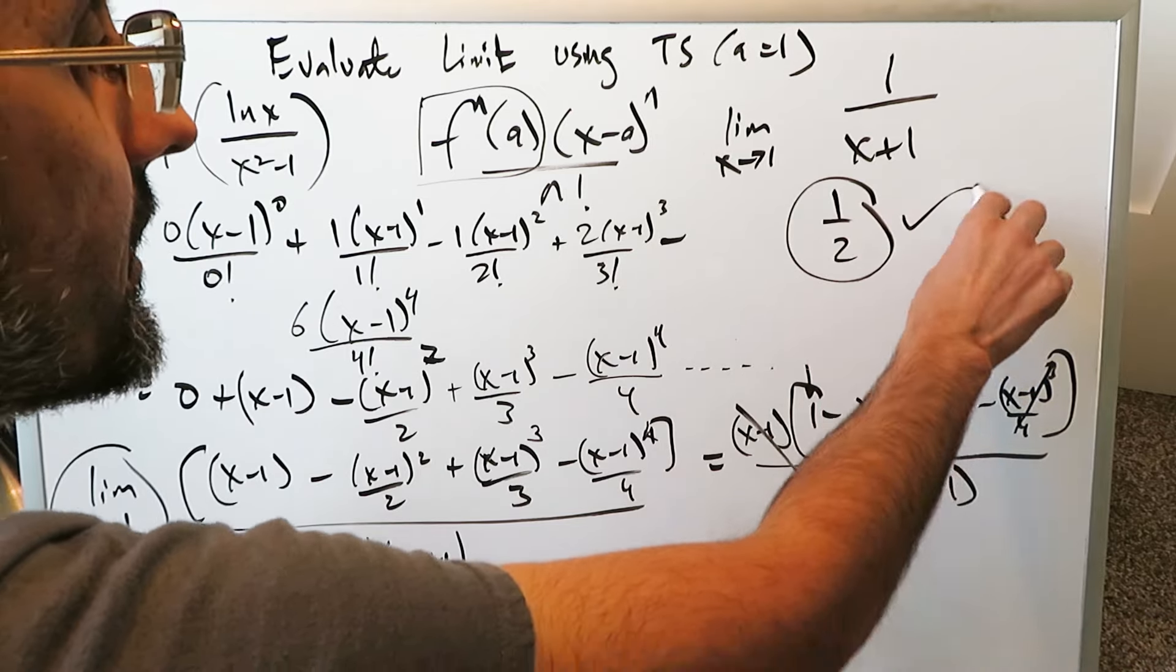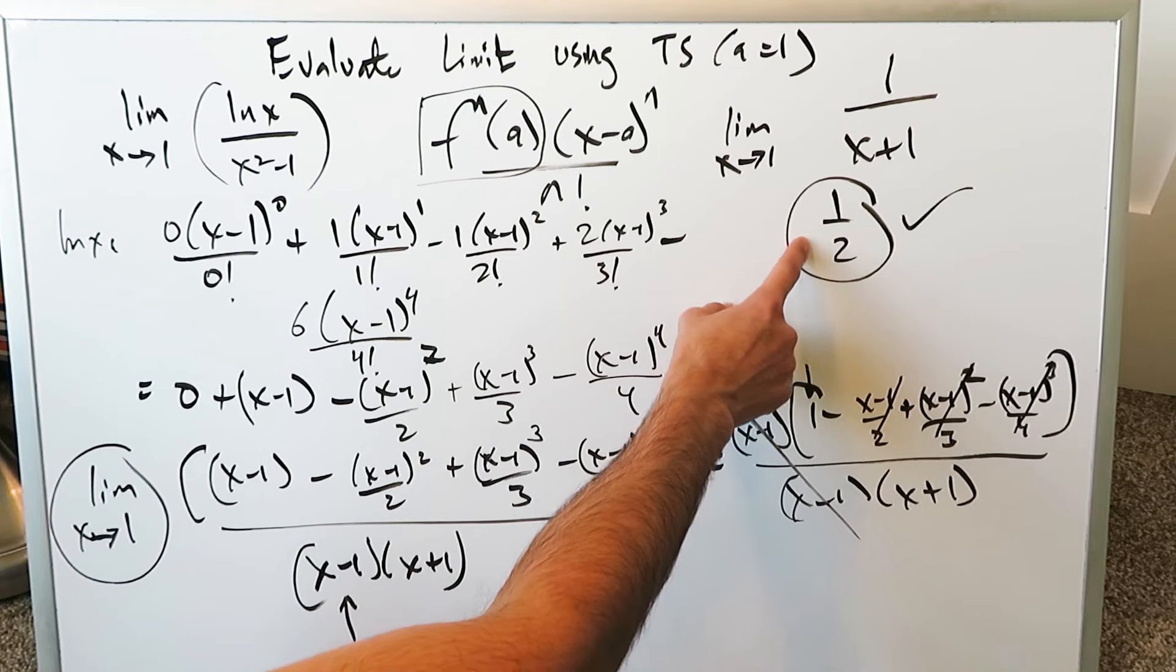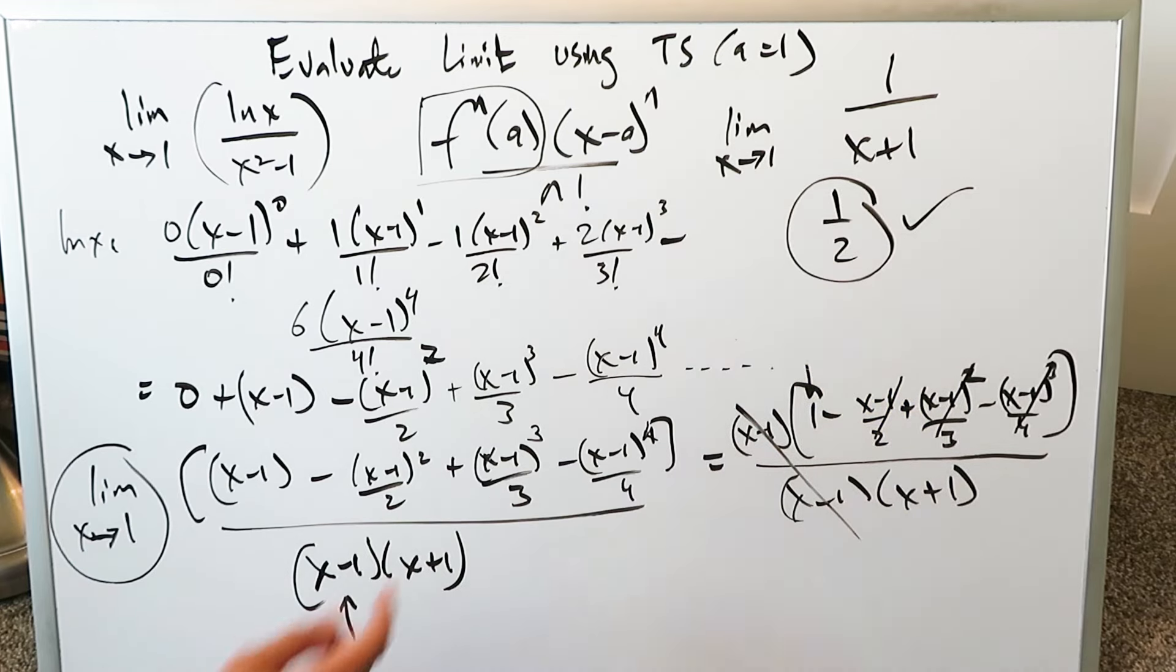You'll get here 1 over 2 and that will be your answer for this limit evaluation. You could have done it easily by Le Hopital's and you know you can. So this answer here should be right. 1 over 2 is good, especially with us centering everything around A equals 1 for the Taylor series expansion of natural log x.